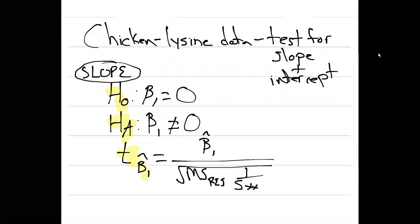Here is our test statistic to calculate the t statistic for the beta one hat variable. Remember we have a hat on top of beta one because we've estimated it with our data. The numerator is beta one hat and we divide that by the square root of the residual mean square and then multiply by one over s sub x x. Now remember that s sub x x isn't really a value that's meaningful in terms of our results, but it helps us in our calculations to determine a lot of things related to simple linear regression.